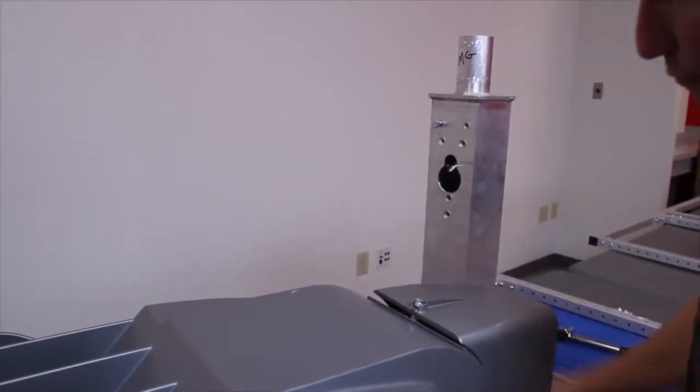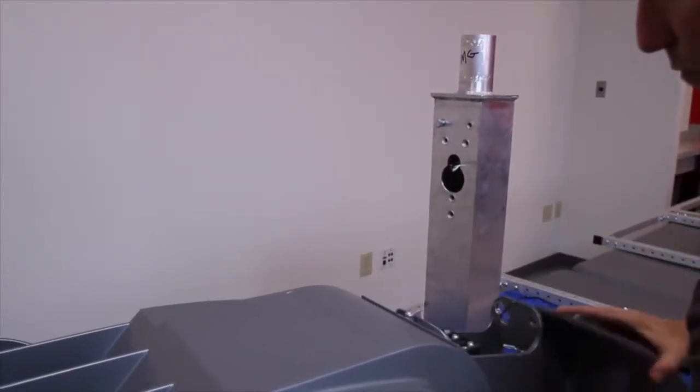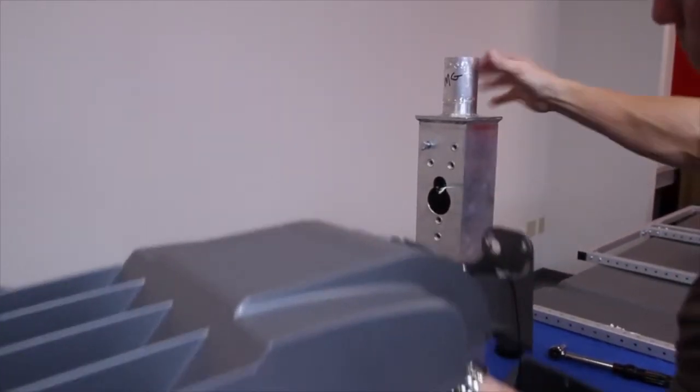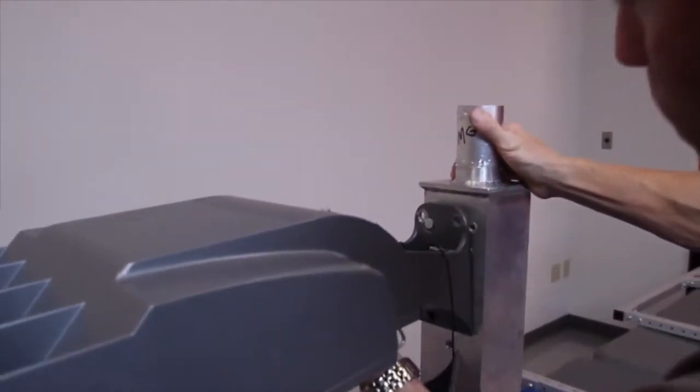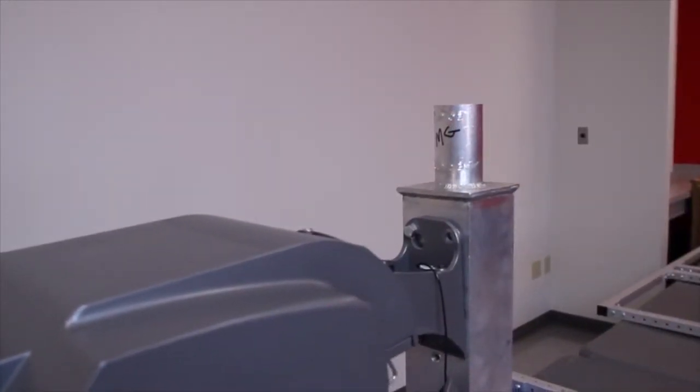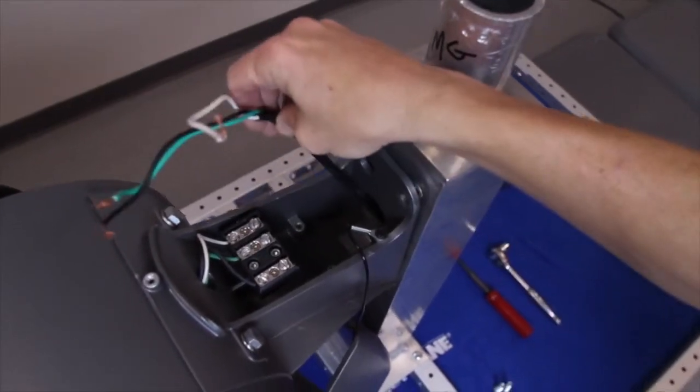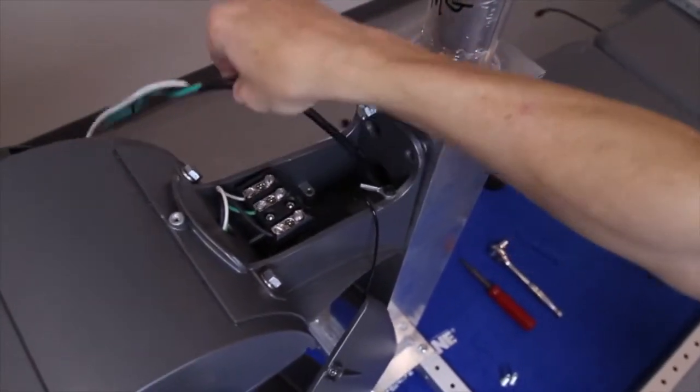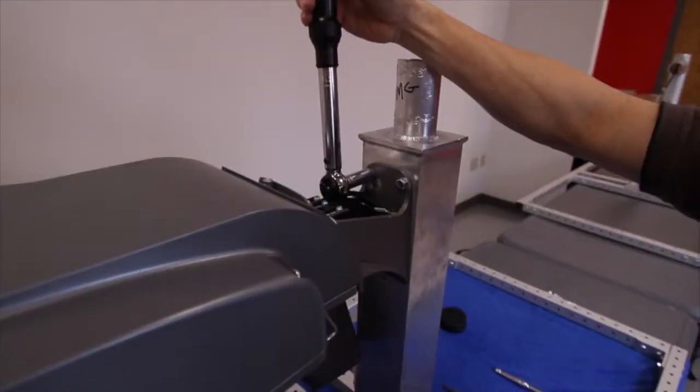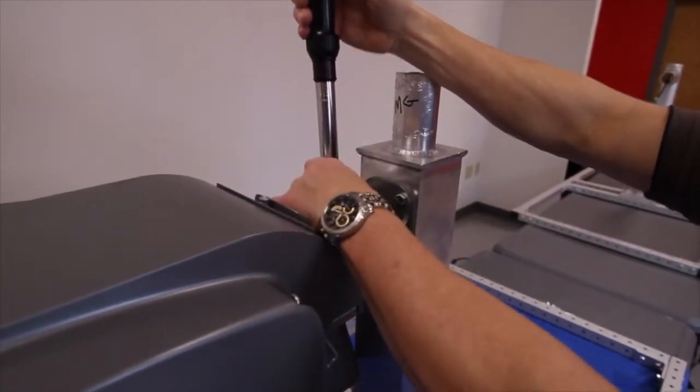Next, remove the cover. Mount the luminaire on the bolt you just installed. Ensure that the wire is not pinched in the wire way. Next, secure the luminaire with the two remaining bolts. Torque the mounting bolts per the instruction manual.